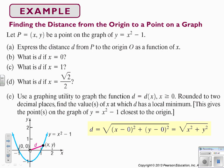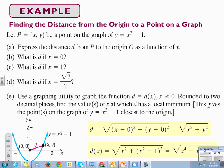Starting with the distance formula from (0,0) to any point on our graph: square root of (x minus 0) squared plus (y minus 0) squared, which is the square root of x squared plus y squared. Now we know that y equals x squared minus 1, so we replace y with x squared minus 1 and simplify — multiplying out (x squared minus 1) times (x squared minus 1) and combining the x squared terms — to get x to the fourth minus x squared plus 1.